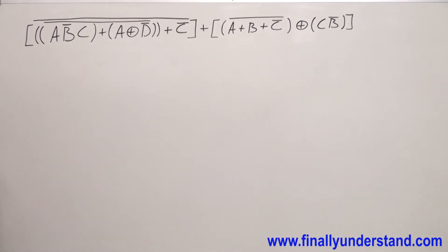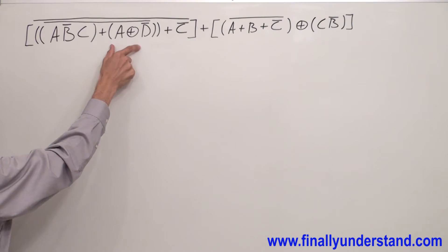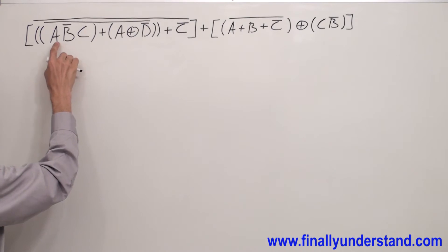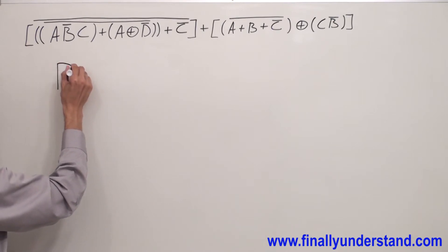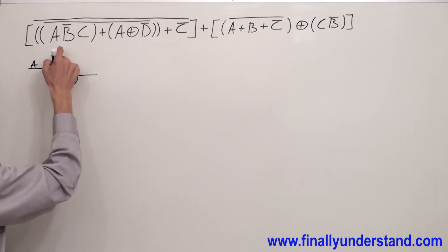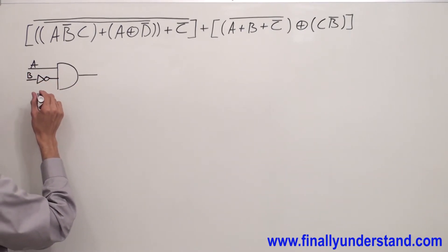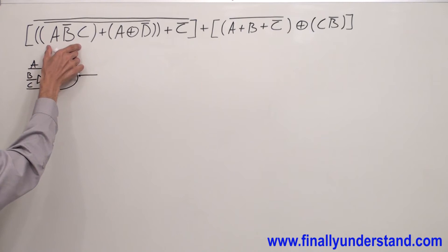Like always, we are going to start drawing the circuit by implementing the expressions inside of the parentheses. I am going to start from these parentheses. This is a three-input AND gate. I have three-input AND gate with input A, B̄ — so that's why I have an inverter — and C. I finished with the first parentheses.